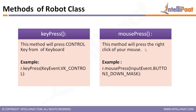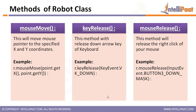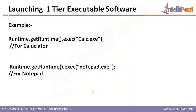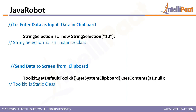The key methods in Robot class include keyPress, mousePress, mouseMove, keyRelease, and mouseRelease. There are also methods you'll use for copy and paste operations — for example, if you want to copy and paste some content using Ctrl+C.